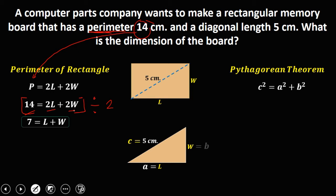A and B are the two sides. So L is A, W is B. Then substitute these values to this formula. So 5 squared equals L squared plus W squared. Then this 5 squared is 25. So we have 25 equals L squared plus W squared. So this is the second equation.